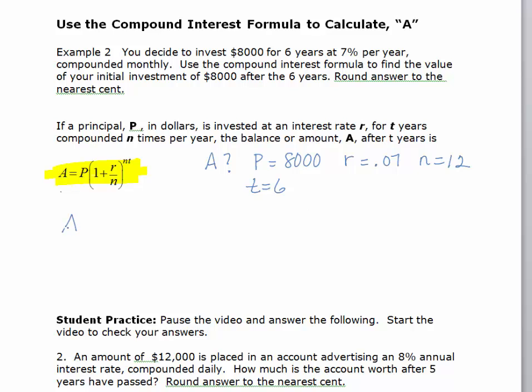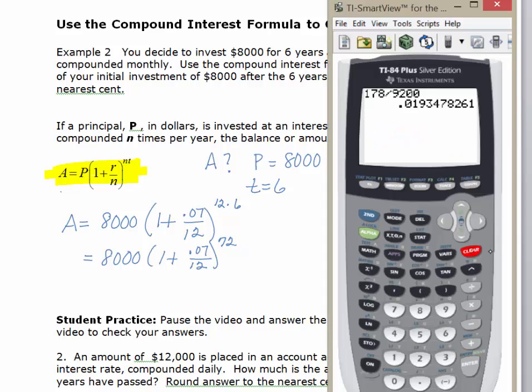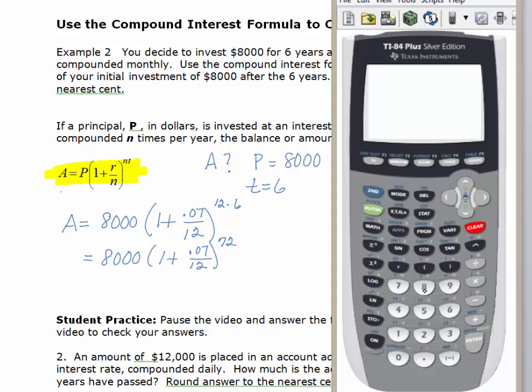So our job is to basically substitute into this formula and then evaluate it on our calculator. So P is 8,000, 1 plus R over N, so it's 0.07 over 12 to the 12 times T, which is 6. And so before you type this into your calculator, you never want to round until the very end of a problem. So before you type this in, I would simplify as much as you can. We're going to rewrite this as 8,000 times 1 plus 0.07 over 12 to the, do the 12 times the 6. So we're going to evaluate that at 72. And we're going to type this into our calculator, clear out what we had there before. So we're going to take the, slide this up a little bit. We're going to take the 8,000.